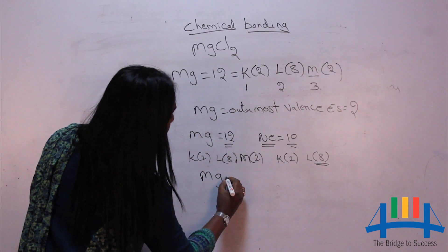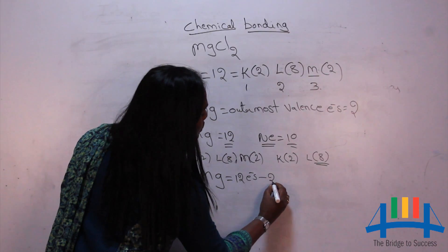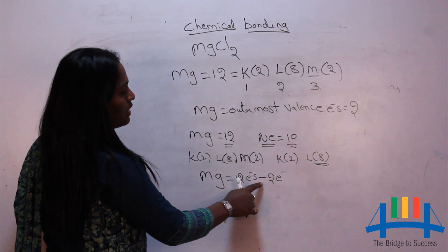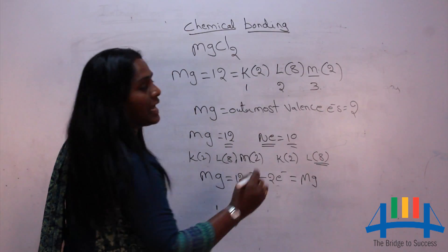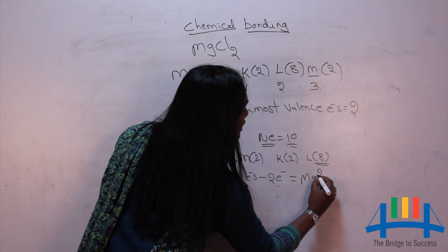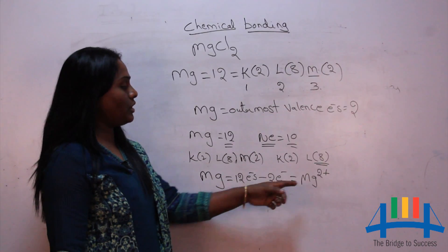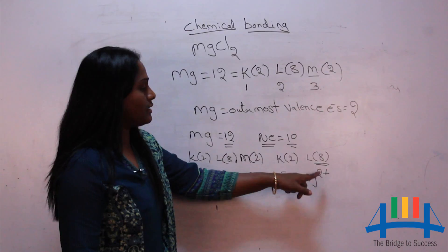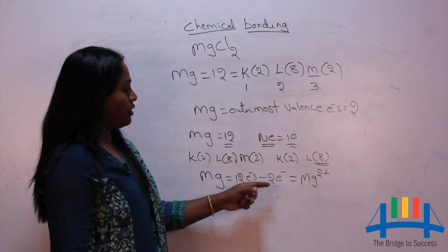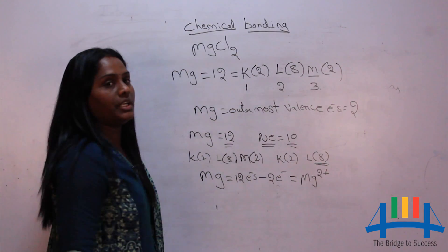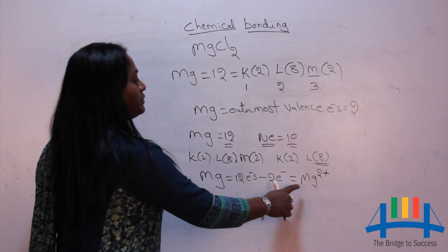Magnesium has 12 electrons; subtracting 2 electrons gives the magnesium ion. Since magnesium is losing electrons, we put a positive sign. It lost two electrons, so it becomes Mg²⁺. In this molecule, the valency of magnesium is 2.